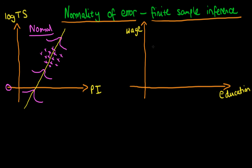Now let's think about a circumstance where this almost certainly isn't the case. On the right hand side is a graph of an individual's wages against their level of education. Note that in both of these circumstances I'm going to assume that all of the Gauss-Markov assumptions are satisfied, so under those conditions OLS we know is still BLUE.